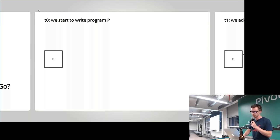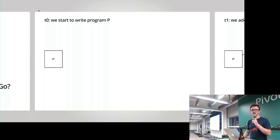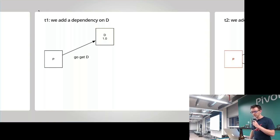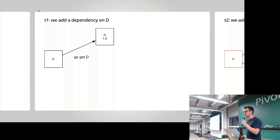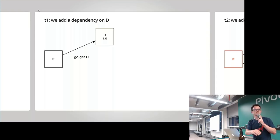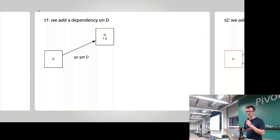As we're writing P, we think to ourselves we'd really like to use a package that has some sort of feature. That package is D. So what we do is go get D, and D at the time of our go get is at version 1.0. Go get works by getting the latest version by default, so we get version 1.0. It might actually translate to actual versions on something like GitHub. That's time T1.